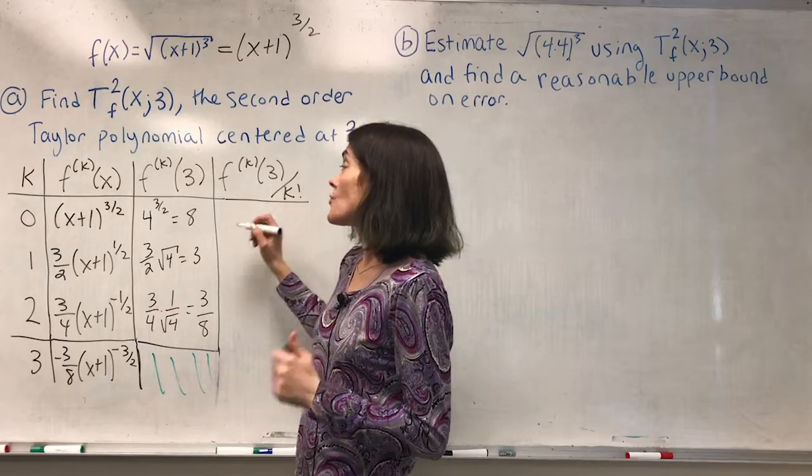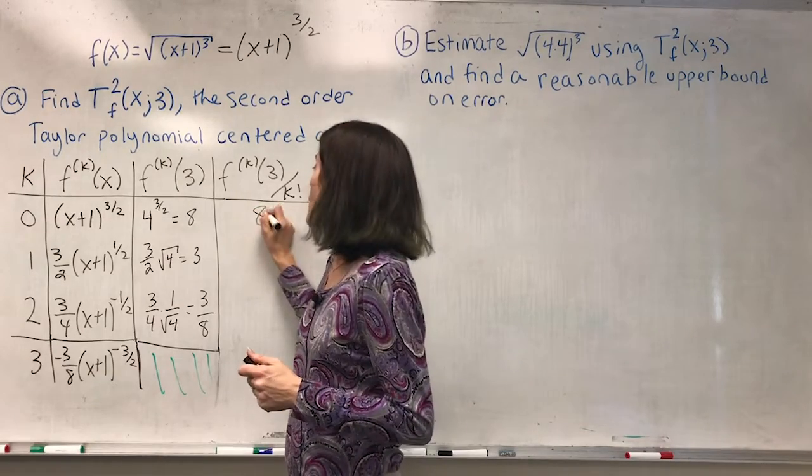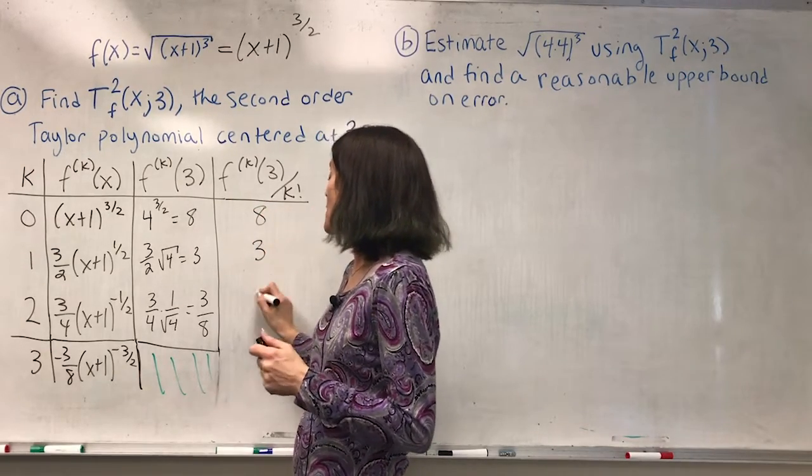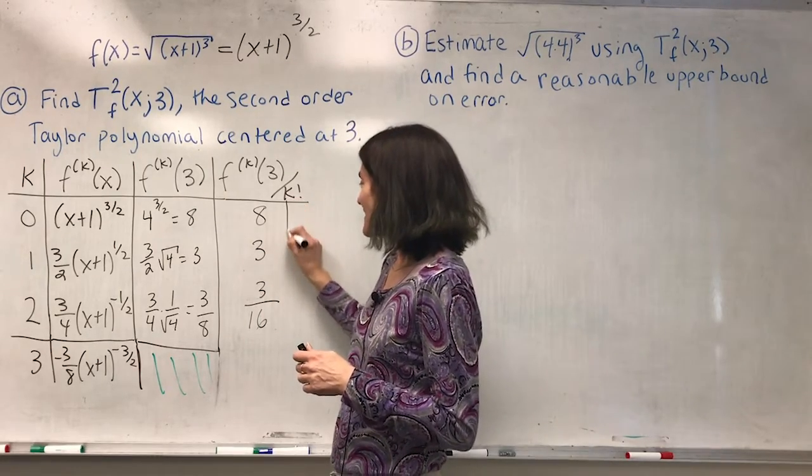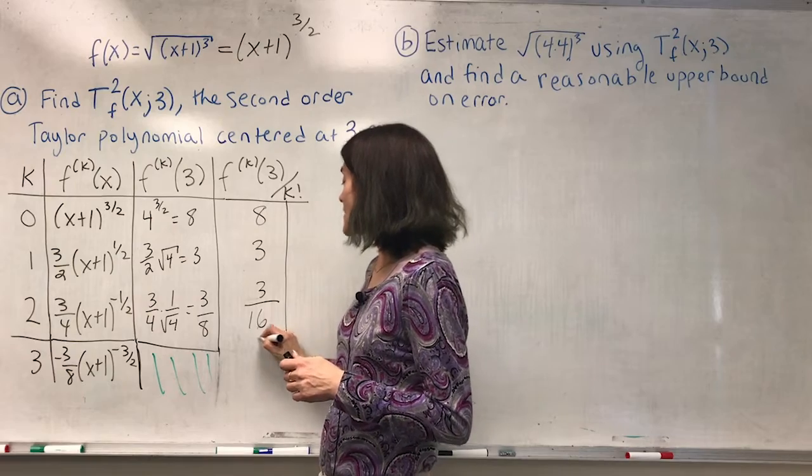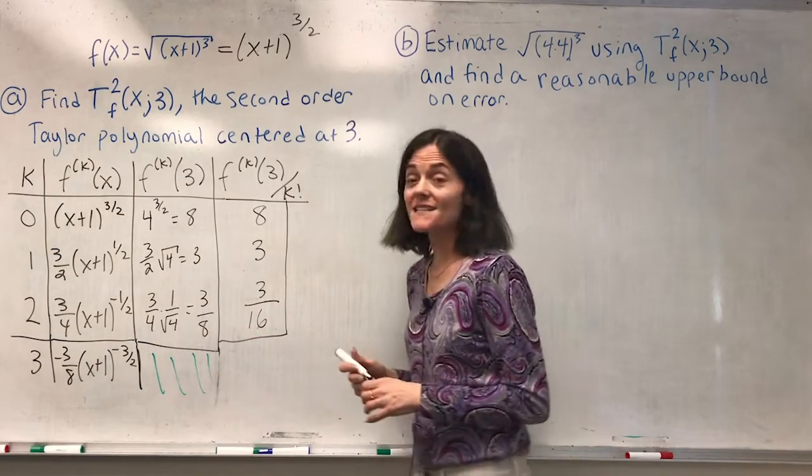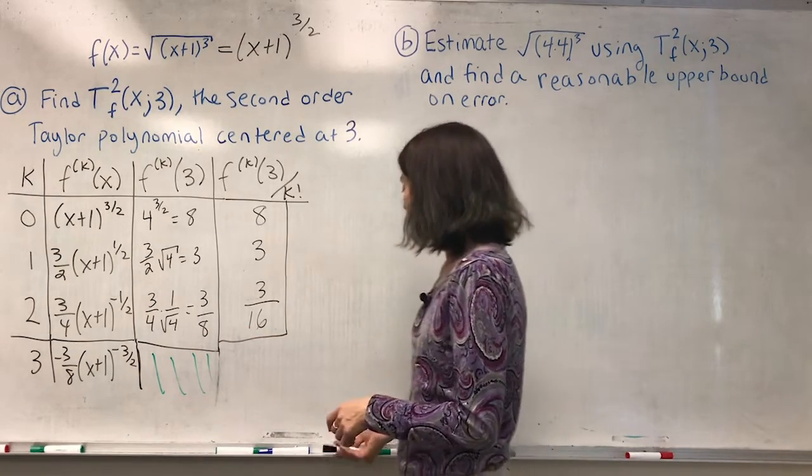Then I divide by k factorial. 0 factorial is 1, 1 factorial is 1, 2 factorial is 2. So these are my coefficients.